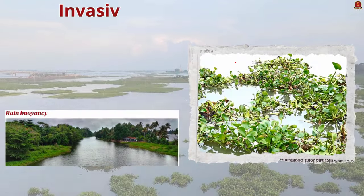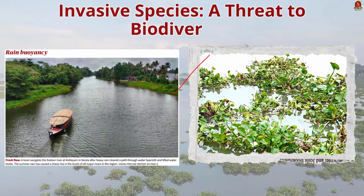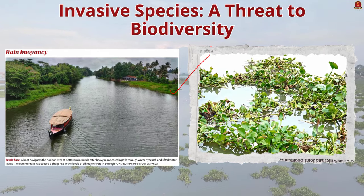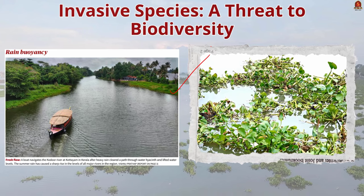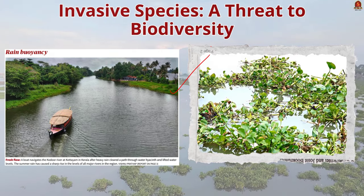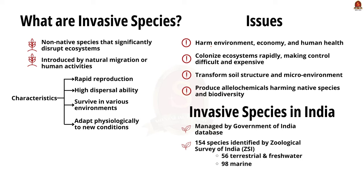The next news article features an image of a boat navigating through the Kudur river at Kottayam in Kerala. Heavy rain has cleared a path through water hyacinth and lifted water levels in the river. In this backdrop, let us understand about invasive species and initiatives taken to prevent them. Invasive species are non-native species that significantly modify or disrupt the ecosystem they colonize.